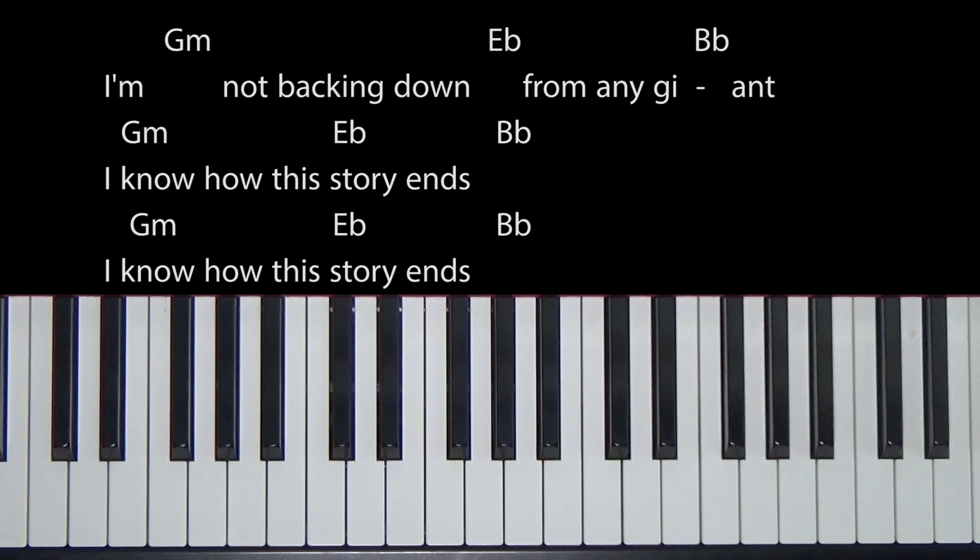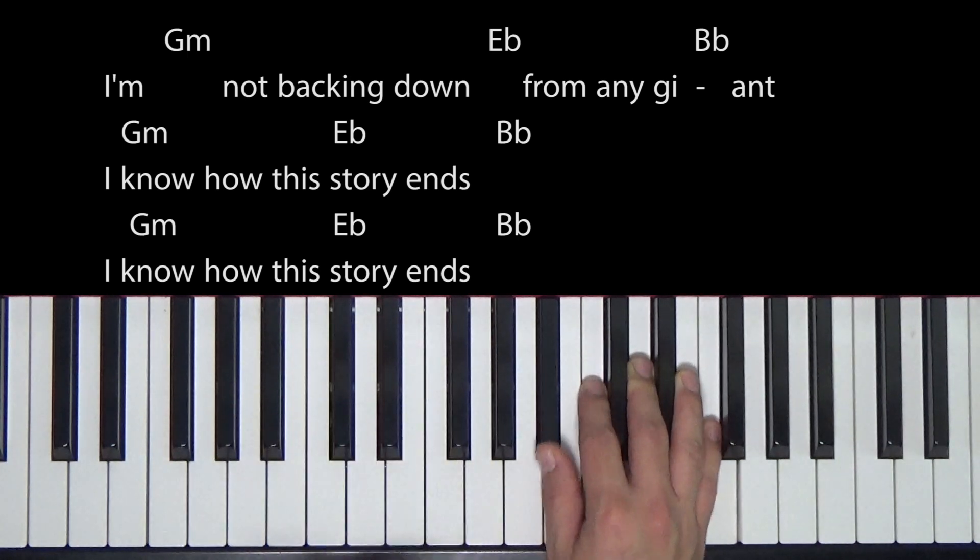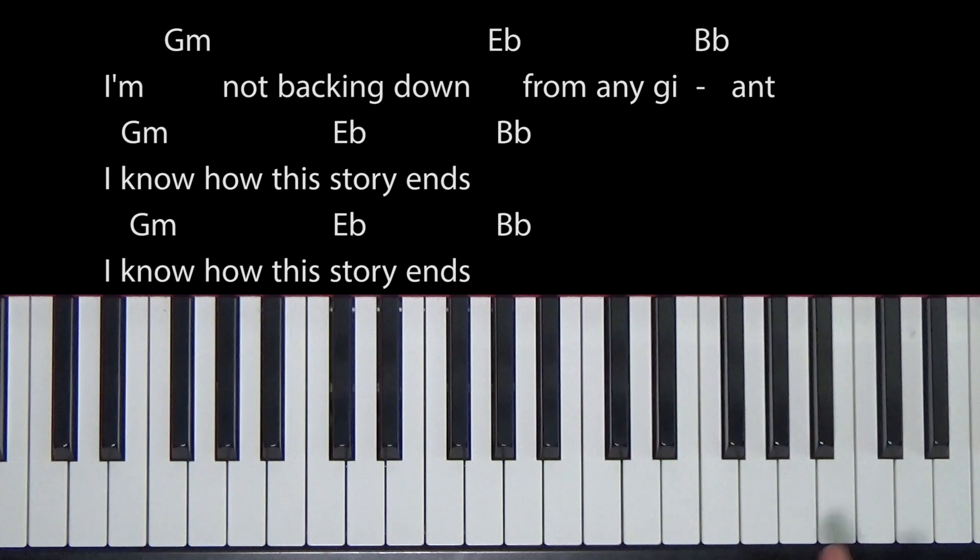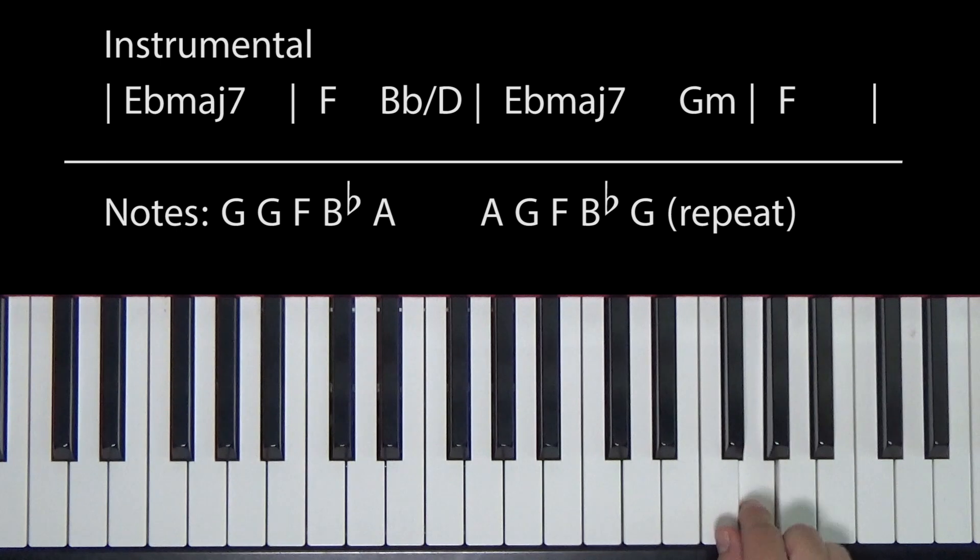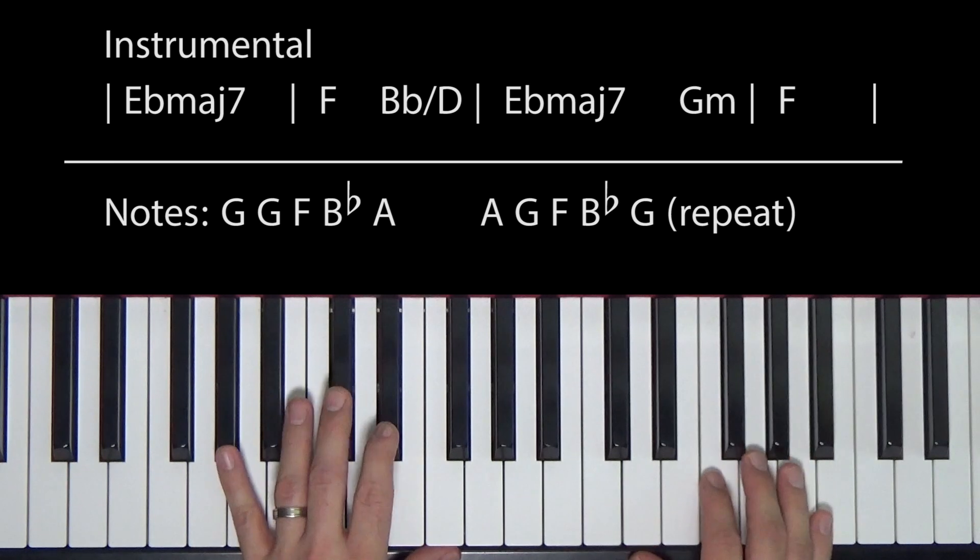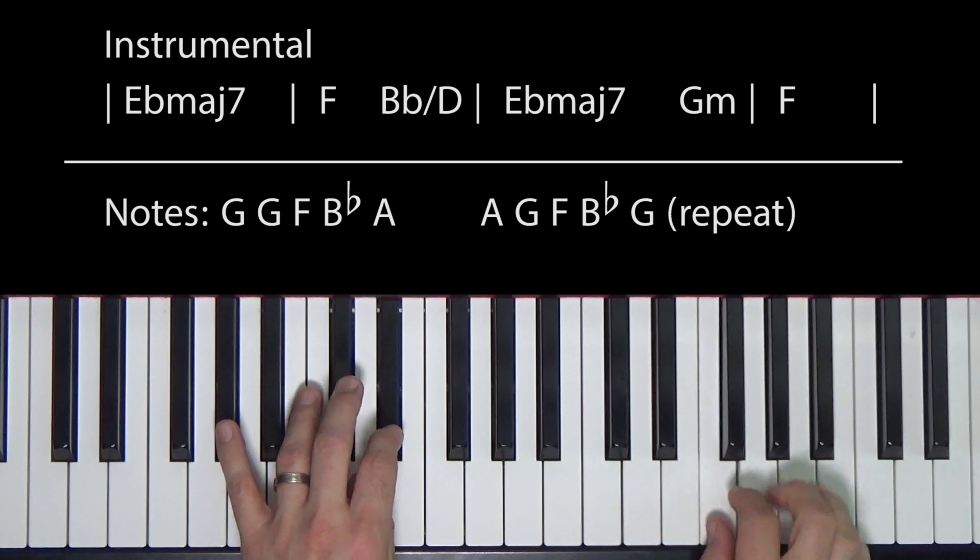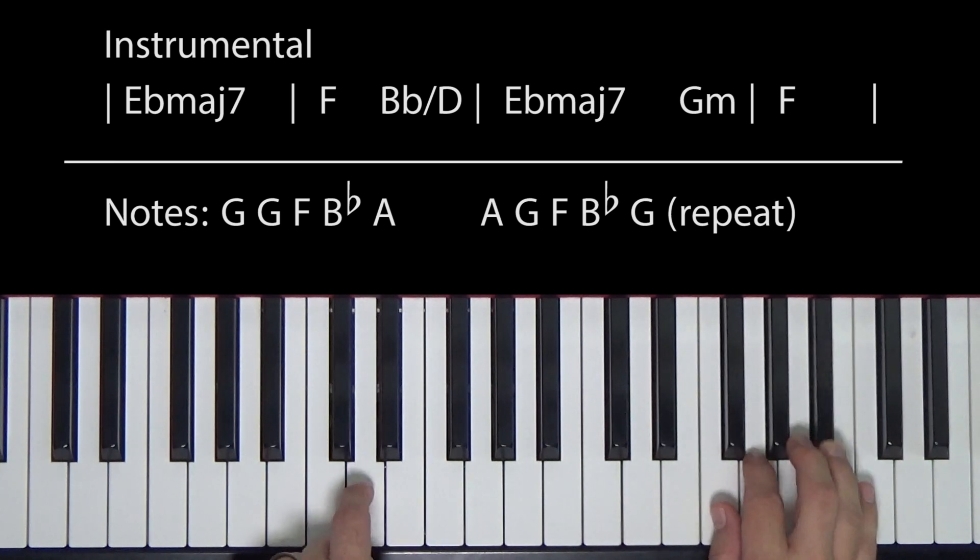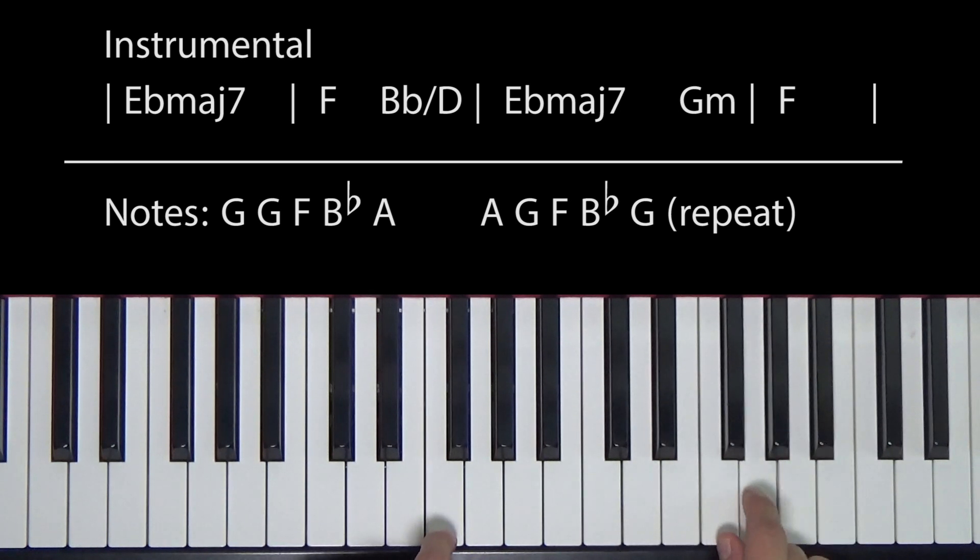Let's look at the instrumental part. And at the end of this, we will play and sing through this. But the instrumental part is a neat little thing. Again, you can do it as simple as you want to. Or you can go a little more complicated. I'm gonna show you both. So first, the simple. So G, G, F, B flat, A. A, G, F, B flat, G. So let's go slowly. Two, three, four, one.